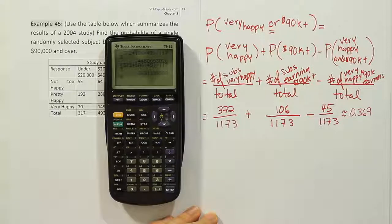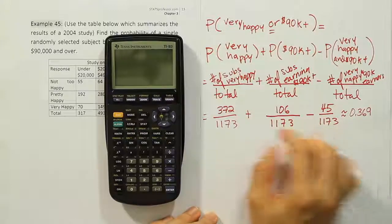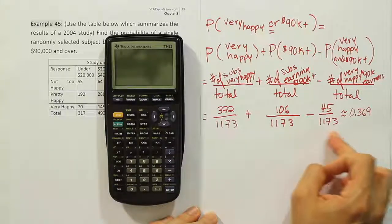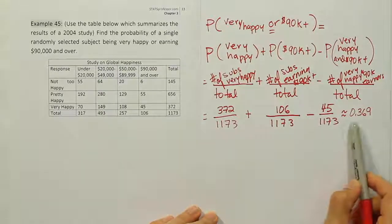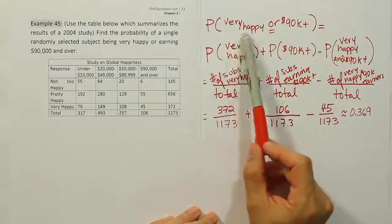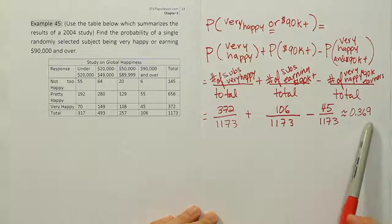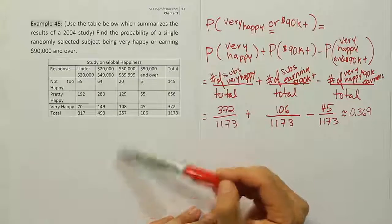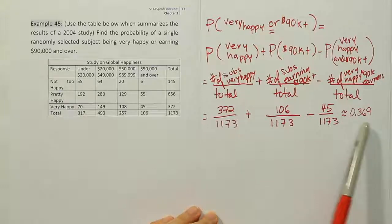Because they all have the same denominator, you don't need to type each fraction separately — just put all numerators in one parenthesized statement and divide by 1173 to get there a little faster. The final answer is 0.369, or about 37%. This means that roughly 37% of the sample were either very happy, earned 90K or more per year, or both — that's what the word 'or' captures in this addition rule problem.